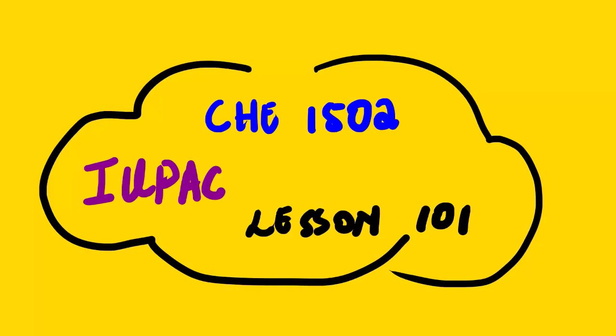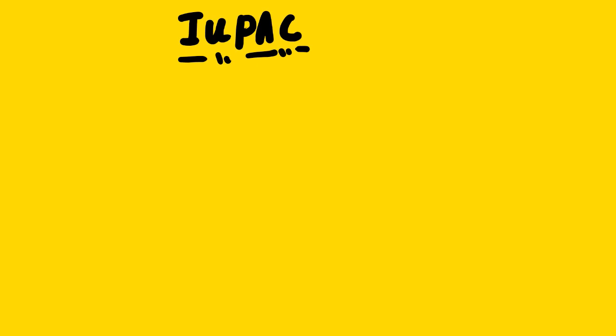Our lesson for today is chemistry 1502, and the topic is IUPAC naming, lesson 101. IUPAC simply means Union of Pure and Applied Chemistry. It has to do with the naming of compounds in organic chemistry, so it is very important to know how to name compounds. We just have to follow a few guidelines in order to give the correct name for a particular compound looking at the structure.